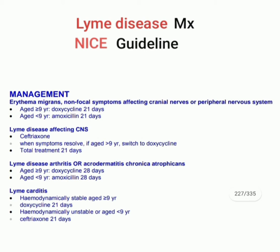Third: if Lyme disease presents with arthritis or acrodermatitis chronica atrophicans, then for age nine years or more we treat with doxycycline for 28 days. If age is less than nine years, we give amoxicillin for 28 days.